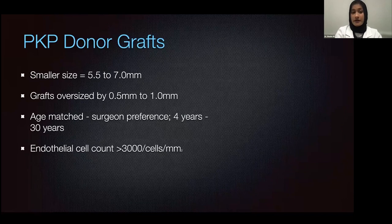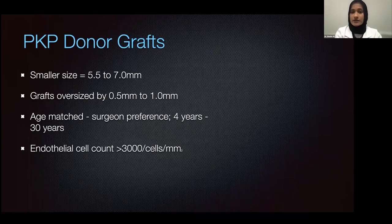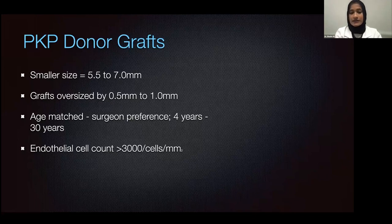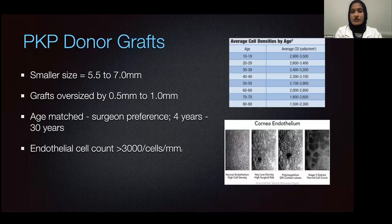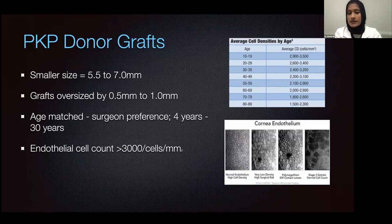For PKP donor grafts, we typically want to use a very small size graft — 5.5 to 7 millimeters — and some surgeons will oversize by 0.5 mm; I tend to oversize by one millimeter. We do like to age-match the tissue as much as possible. Most importantly, the endothelial cell count should be greater than 3,000 cells per millimeter squared. If you are able to get a specular microscopy on the tissue before use, you want to see a normal endothelium. If there is a low density of endothelium, polymegethism, or guttae, you do not want to accept that tissue for your patient.